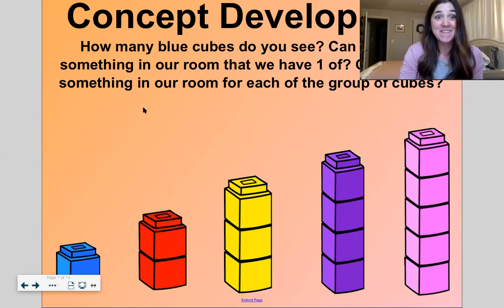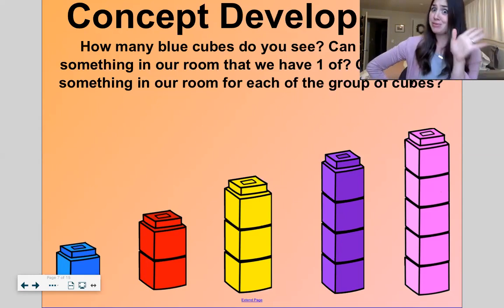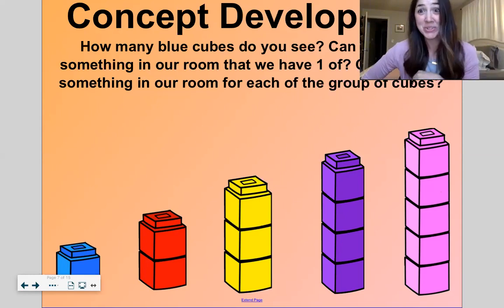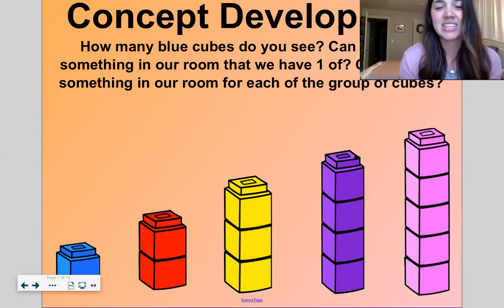And last, we have five. One, two, three, four, five. Can you find something in your room that you have five of? I know that my son in his room has five stuffed animals. That's for sure. Do you have five stuffed animals at your house? I bet. All right. Let's look at the next page.